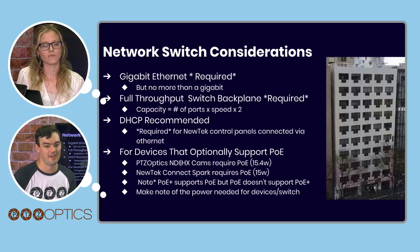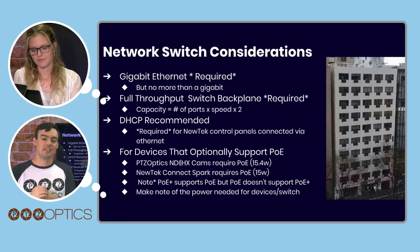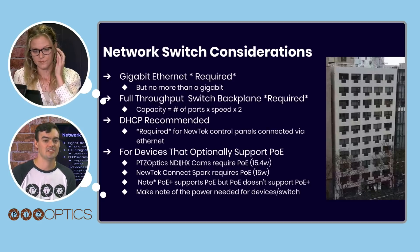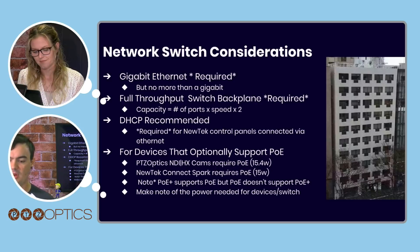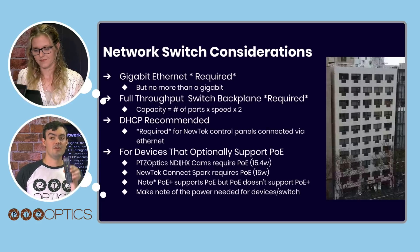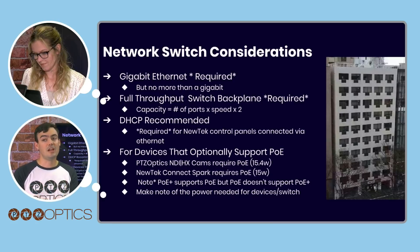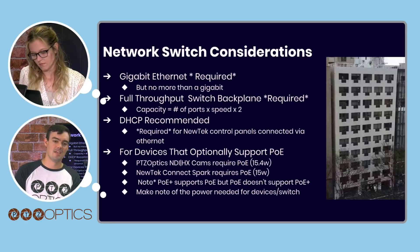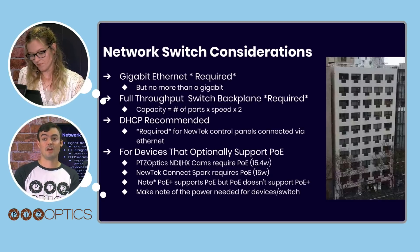DHCP is usually recommended — it will automatically assign IP addresses to cameras and other devices on your network. You can also statically set camera IP addresses. A quick tip: if you're using a PTZOptics camera, you can use the IR remote and hit star-pound-four to see the camera's IP address on the on-screen display, or pound-star-four to set it to DHCP. I generally recommend setting a static IP address so you know how to connect whether you're using vMix, OBS, TriCast, or Wirecast.